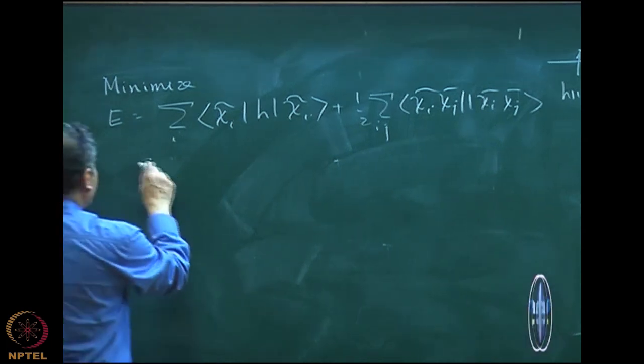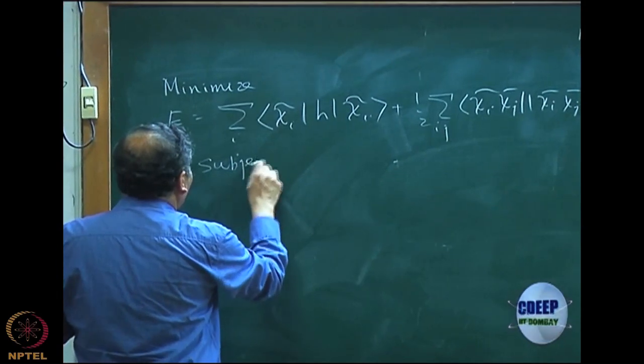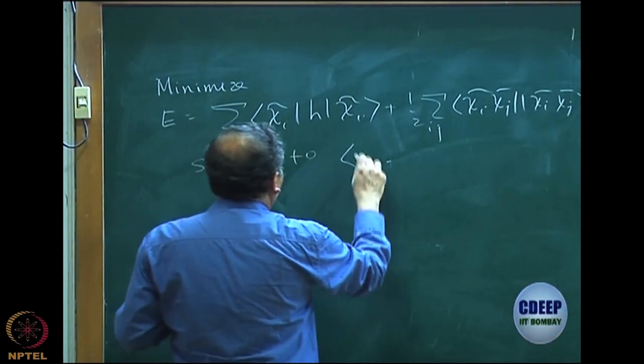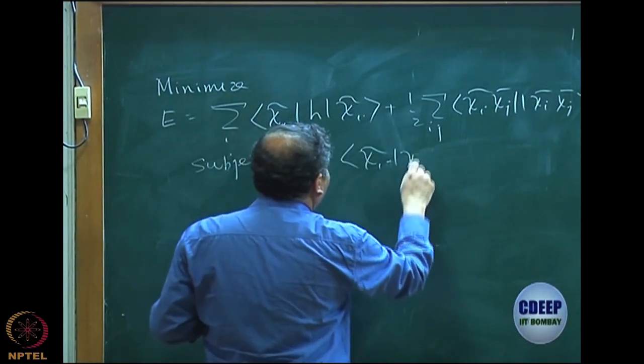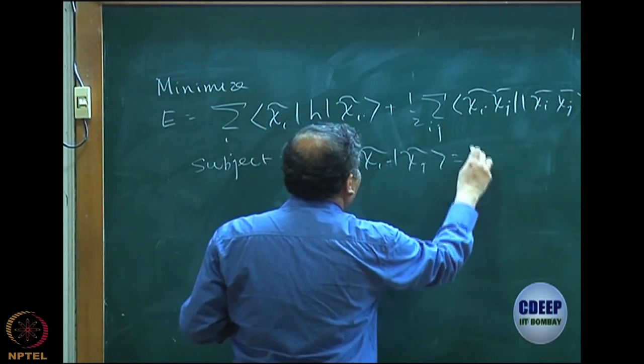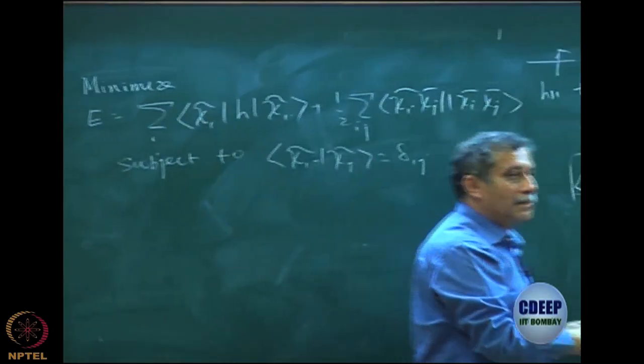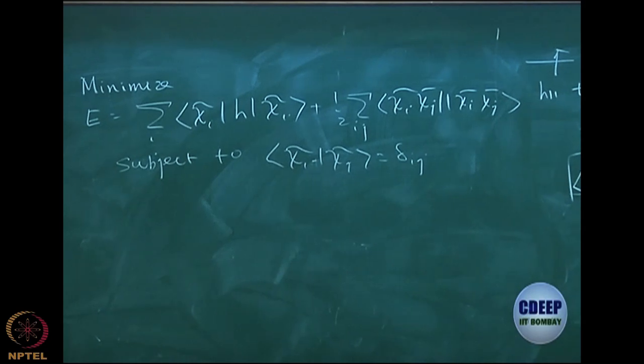Minimize this subject to chi i tilde, chi j tilde equal to delta. So, I have now stated the problem mathematically.